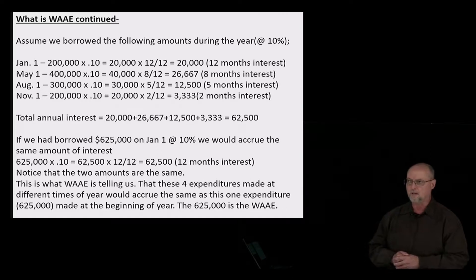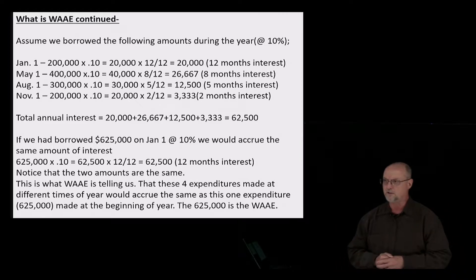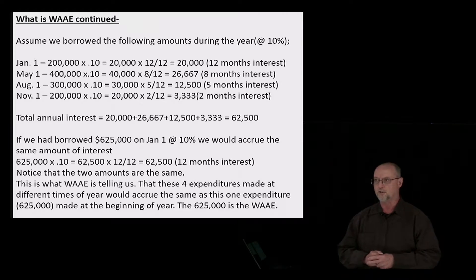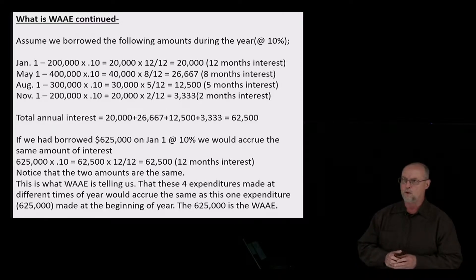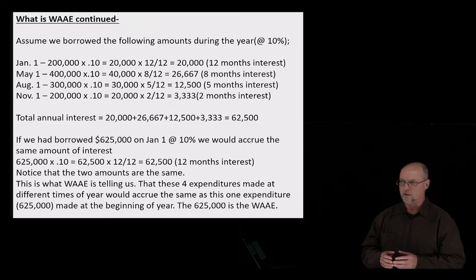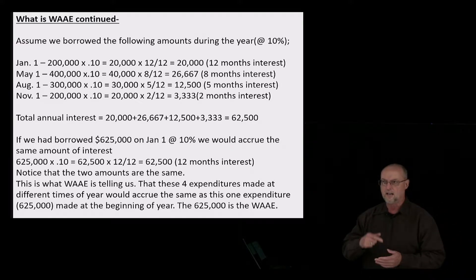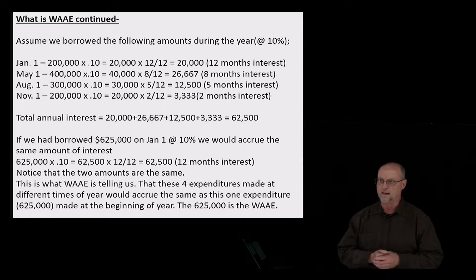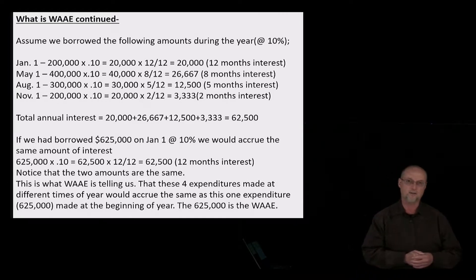Let's further take this example. Assume we make the following expenditures: $200,000 on January 1st, $400,000 on May 1st, $300,000 on August 1st, $200,000 on November 1st, using the same 10% interest. We would accrue different amounts of interest: $20,000 for the January expenditure, $26,000 in May, $12,500 in August, and $3,333 in November — because those costs were different dollar amounts made at different times of year. If we add all those interest costs up, $20,000 plus $26,000 plus $12,500 plus $3,333, it equals $62,500 in interest.